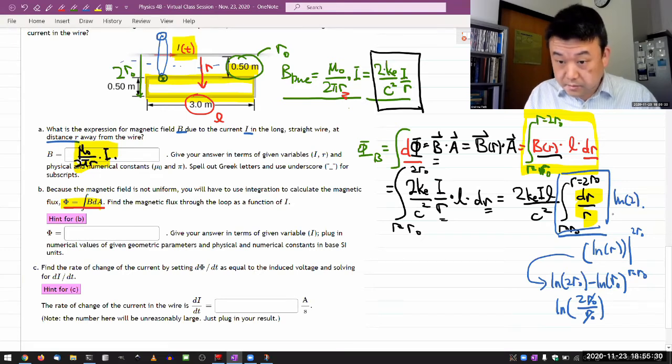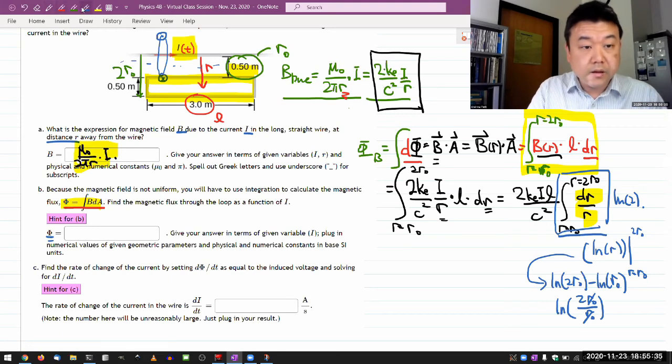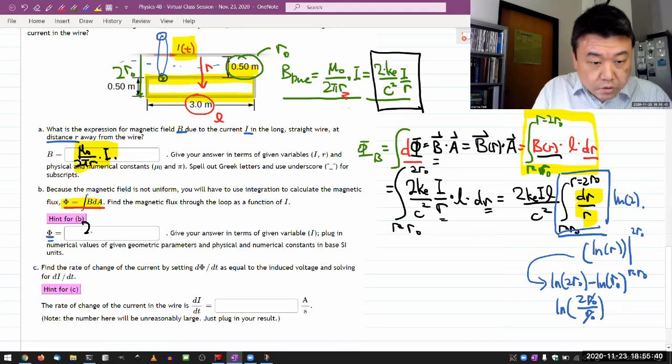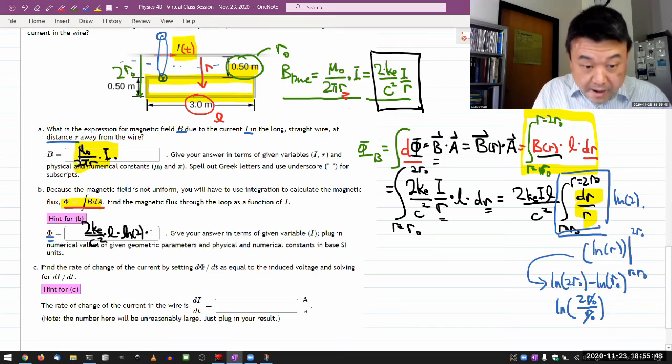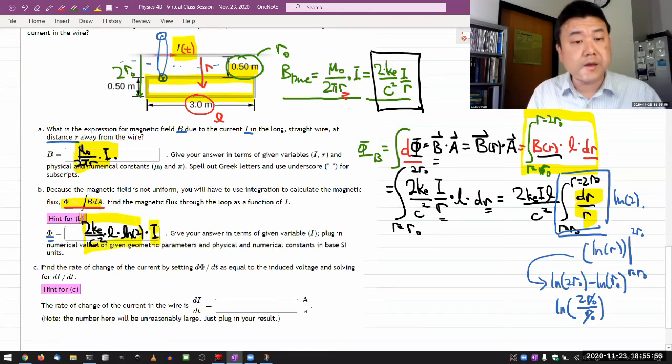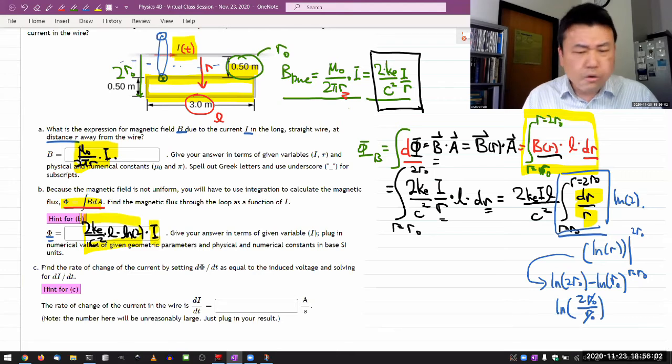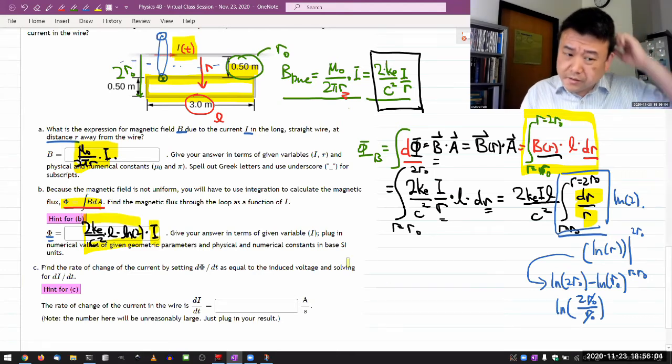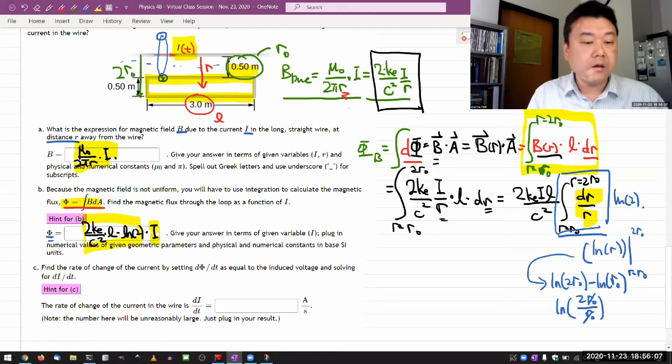With that, I think that's everything. That's the expression for magnetic flux. Let me write that down. I'm going to leave the current at the very end. So it's going to be 2K over C squared times L times natural log of 2 times I, current. This is the only dynamical quantity here. The rest here are constants or things that depend only on geometry. I guess you'll have to plug in the numerical parameters for this.